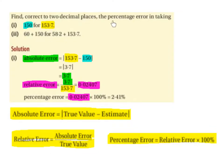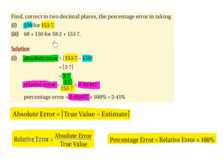Find, correct to two decimal places, the percentage error in taking 150 for 153.7. Absolute error is the modulus of true value minus the estimate: 153.7 minus 150 gives 3.7, and the modulus is just 3.7. Relative error is 3.7 divided by 153.7, giving 0.02407. Percentage error is 0.02407 times 100%, which is 2.14% to two decimal places.